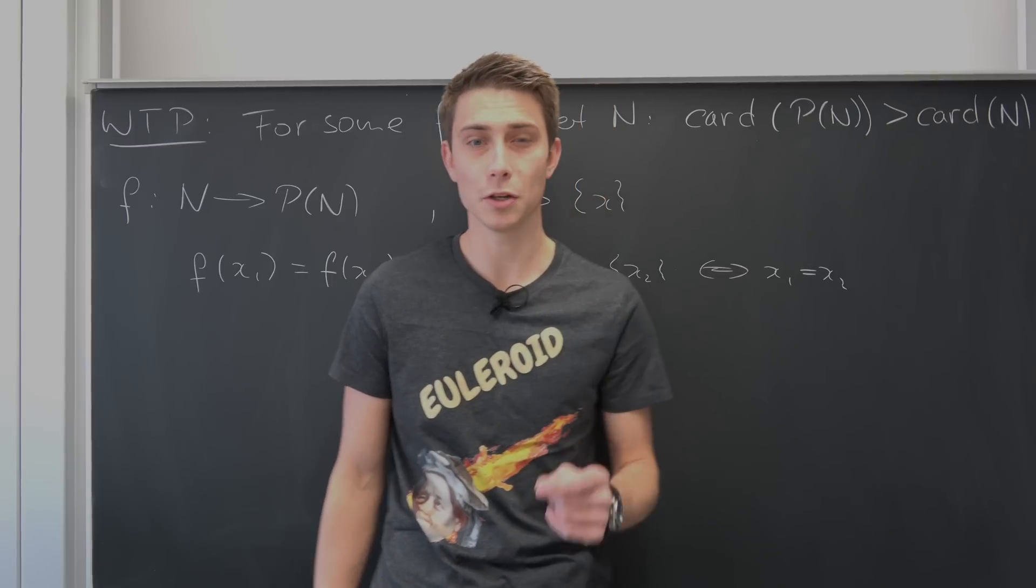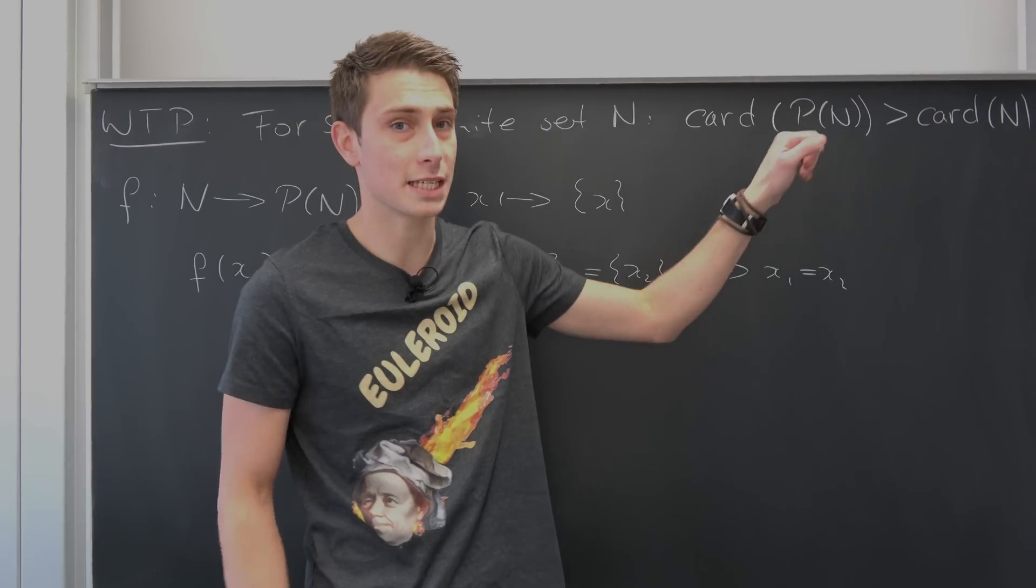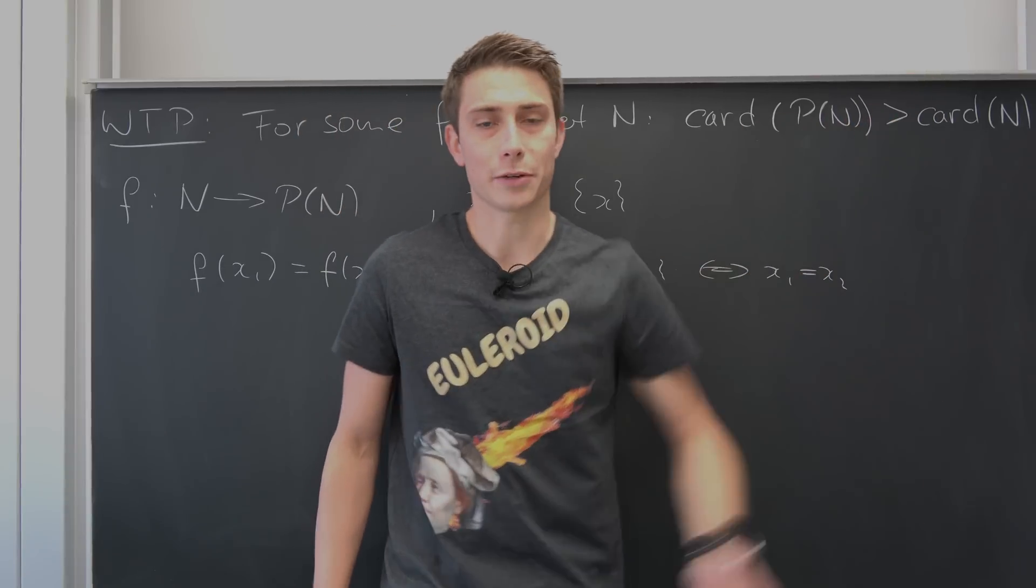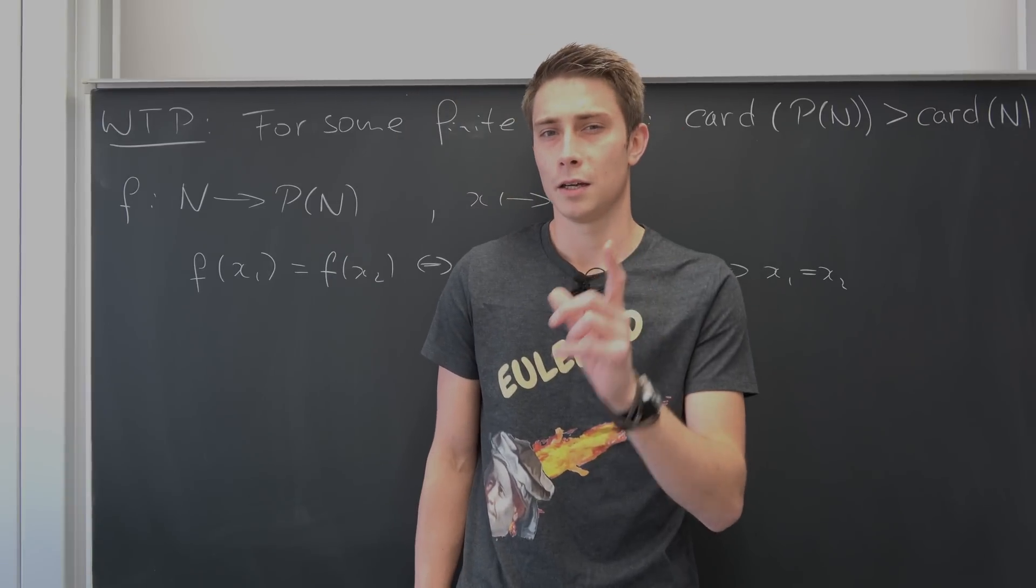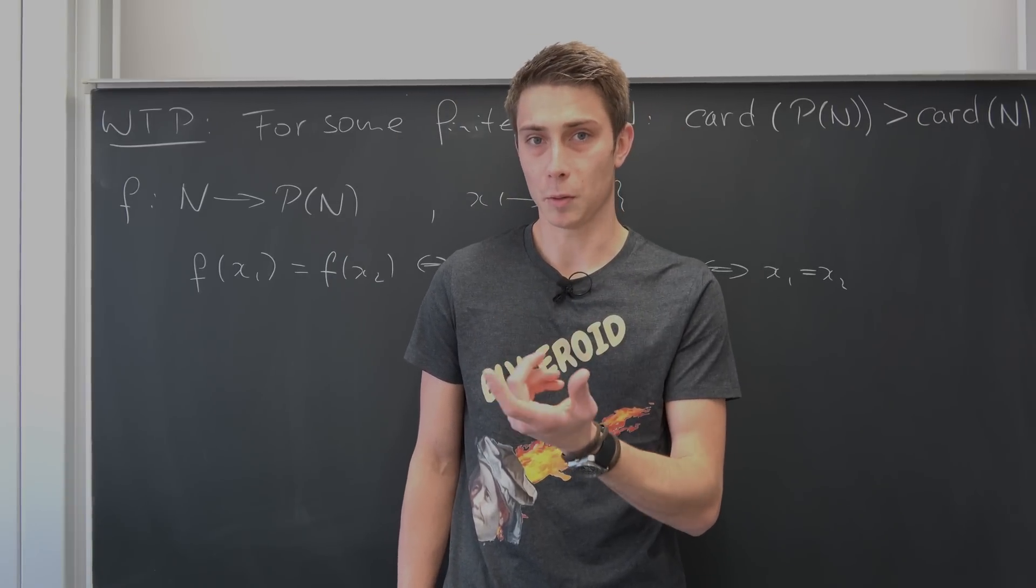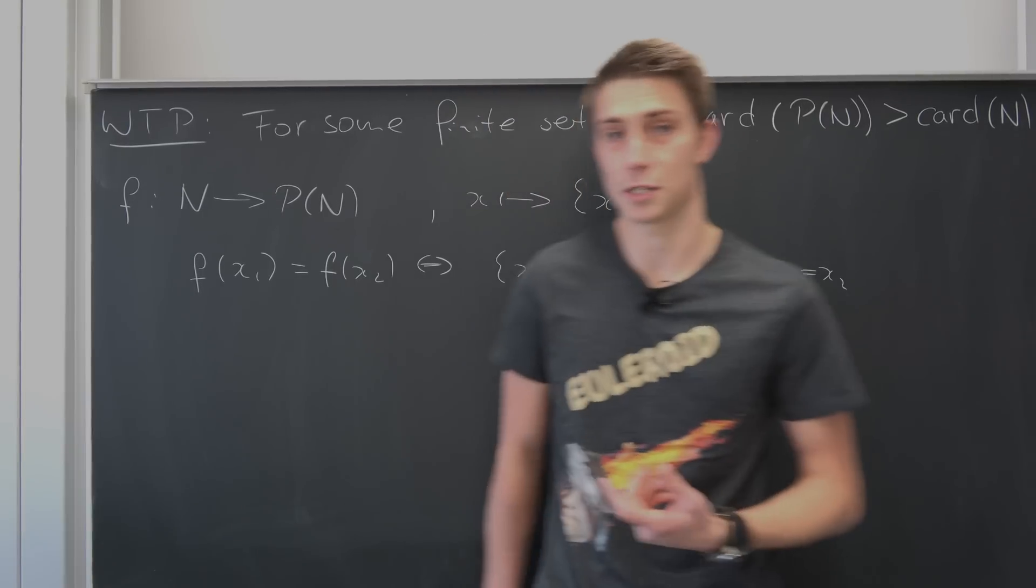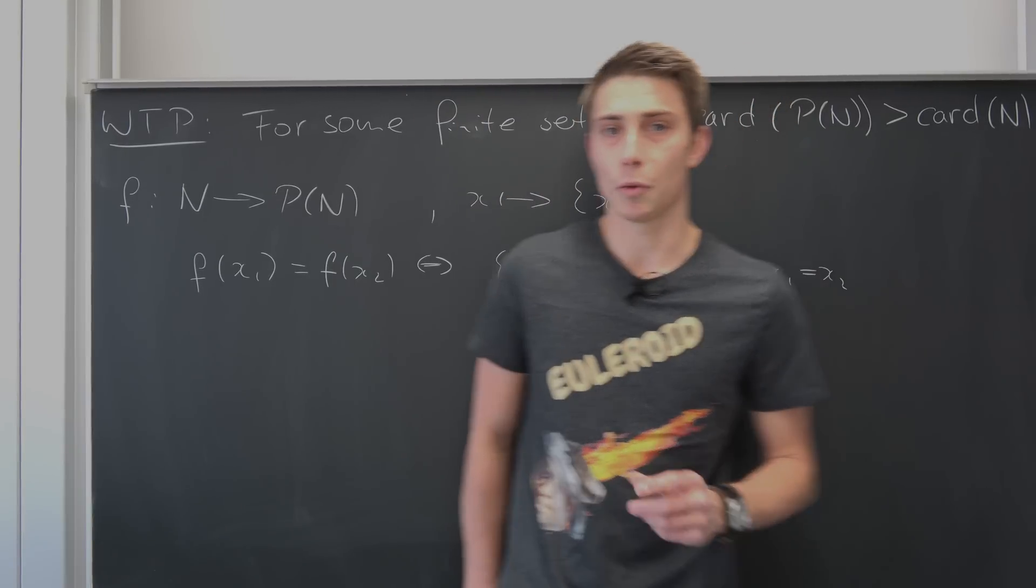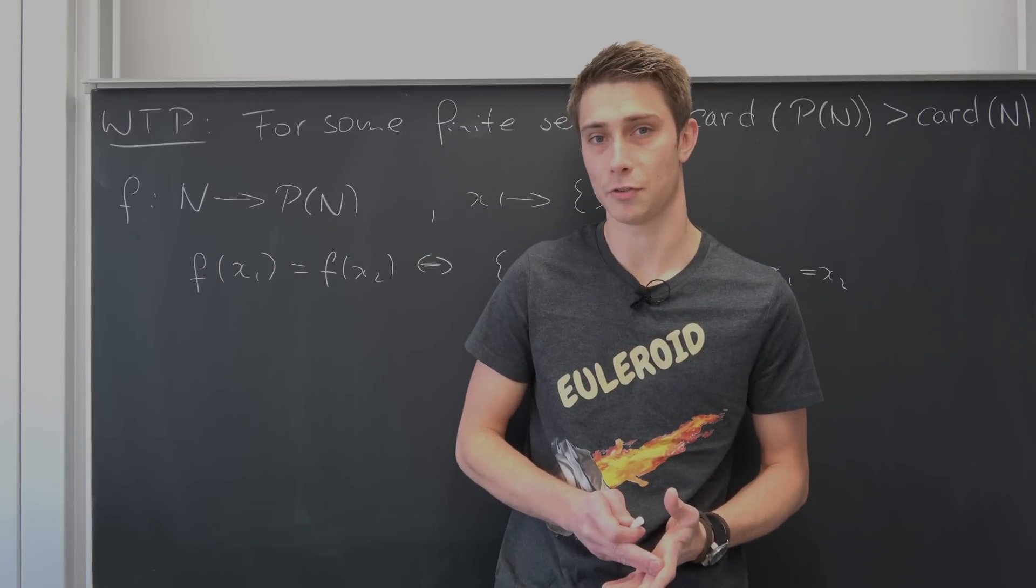But we want to get rid of this equal relationship because our theorem states that this cardinality is always strictly greater than the cardinality of the set itself. To get rid of this equal part we have to get rid of the bijection we assumed at first. Meaning we want to prove that there is no surjection between n and the power set of n.